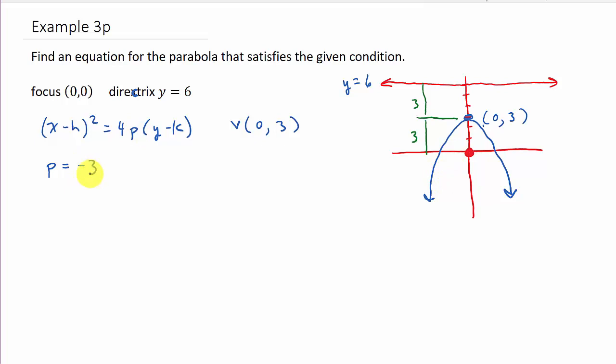Alright, so that's why it's important to draw it to see which way it opens, and then you'll know if p is positive three or negative three. Alright, so now, well look at here. There's p, there's h, there's k. And so we just plug everything in. And so we get x minus h squared equals four times p times y minus k. And so we get x squared equals negative 12, negative 12 times y minus three. And there's the equation of your parabola.